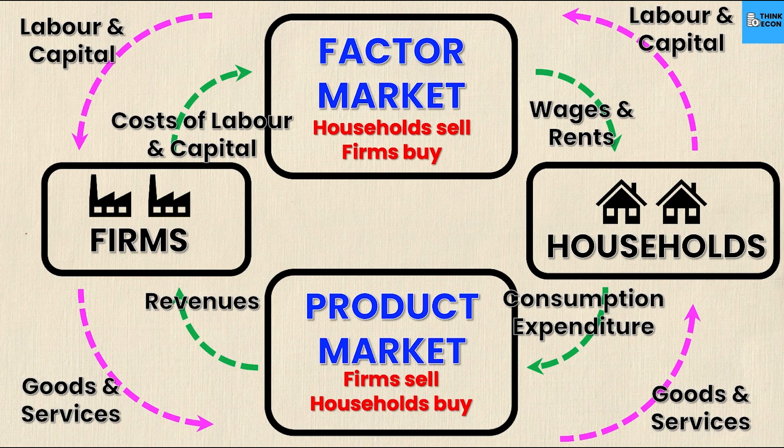In this circular flow diagram, you can look at the green arrow as the movement of money amongst these markets, and the pink arrow as the movement of what is being bought or sold. This does get more intricate as you move on — you start to look at the foreign market, governments, and banks. We'll be making a video on the circular flow of income a little bit later on, so be on the lookout for that.